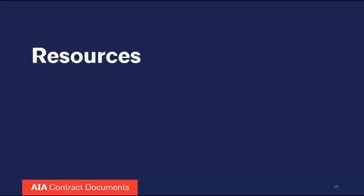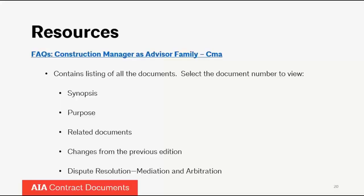That pretty much wraps up the top-line overview of the CM as advisor delivery model. You're going to get these slides and some other information. If you follow the link provided, you can get to documents for each of the forms and agreements shown — you can see a synopsis, find out what related documents there are, and if it's a second or third generation document like the CMA, you can see the differences between our 2019 versions and our 2009 versions of the documents.